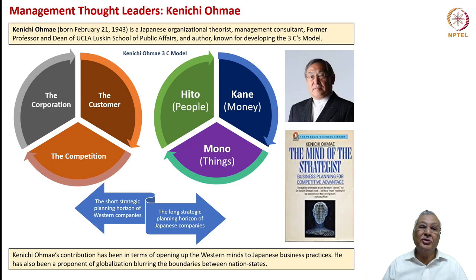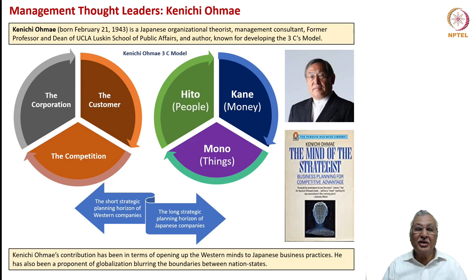Another important thought leader is Kenichi Ohmae. He talked about the Mind of the Strategist, proposing a 2-into-3 model. The first portion is the corporation, the customer, and the competition. The second part is hito — people — kane — money — and mono — things. He said that if a strategist keeps these six factors in mind, he or she would be able to develop a good corporate strategy.